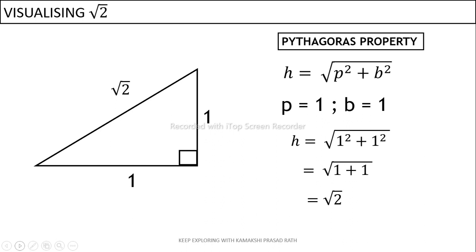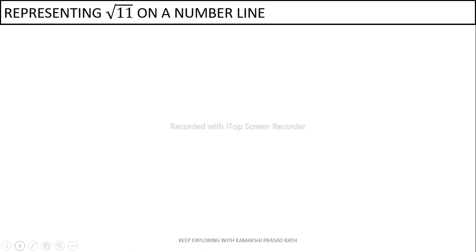In this triangle, the base has been taken as one unit and the perpendicular has been taken as one unit, and we get the hypotenuse as root 2. Using this concept we will do all the constructions.